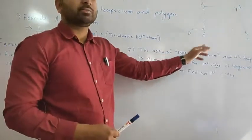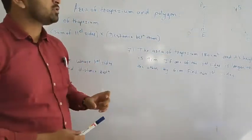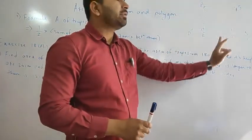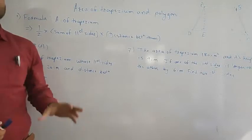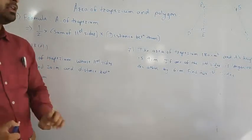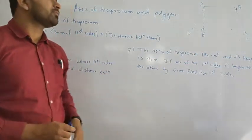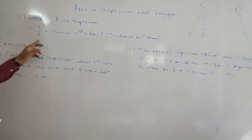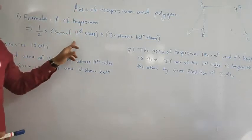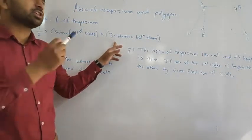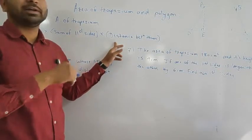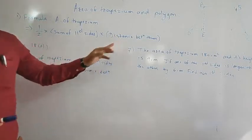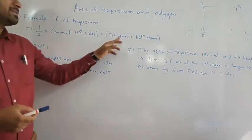I have drawn one trapezium here. In a trapezium, you must know that one of its opposite sides is parallel with the other — like AD is parallel with DC, as we can see in this diagram. The formula for the area of a trapezium is: half, multiplied by the sum of the parallel sides, multiplied by the distance between them. The distance between them is also called the height or altitude of the trapezium.